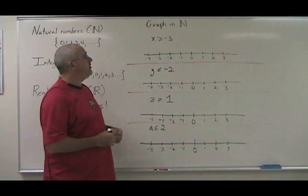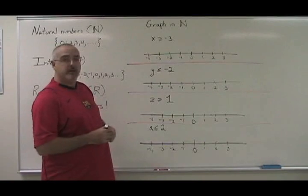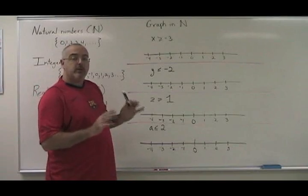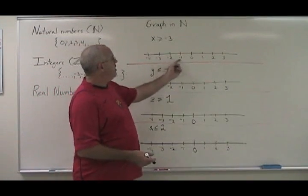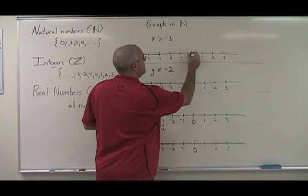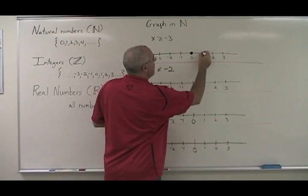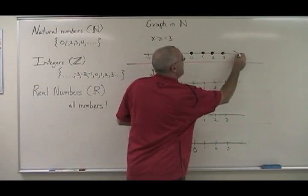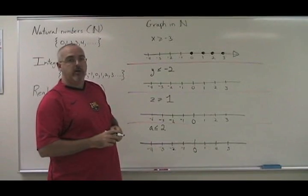First, we're going to learn how to graph in natural numbers. Here are four examples. x greater than or equal to negative three. This is a bit of a trick question because in truth, all natural numbers are greater than or equal to negative three. We can ignore the negative side of the number line because natural numbers start at zero — zero, one, two, three and going on forever in the positive direction. All natural numbers are greater than or equal to negative three.